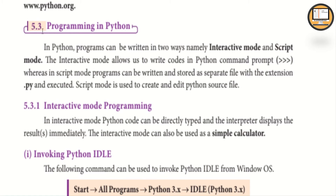Section 5.3 covers Programming in Python. In Python, programs can be written in two ways: interactive mode and script mode. Interactive mode allows us to write and execute code directly at the Python command prompt. Script mode allows programs to be saved as a separate file.